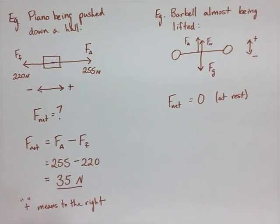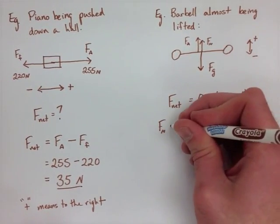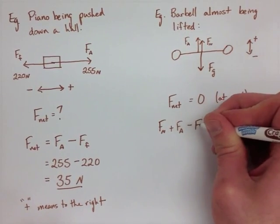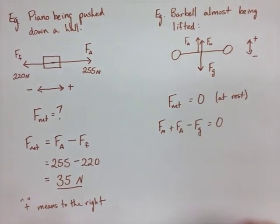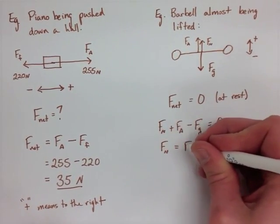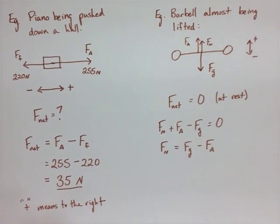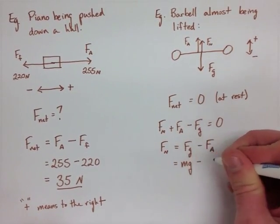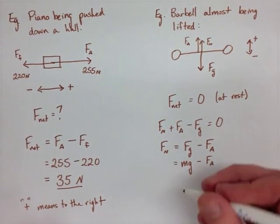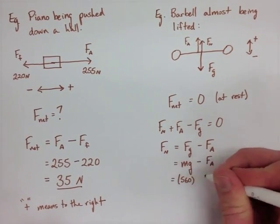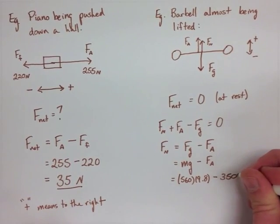Our net force has to be zero because we're at rest. If positive is up and negative is down, our normal force plus our applied force minus the force of gravity will equal zero. We can find out our normal force here by doing the force of gravity, which is mg, minus our applied force, which was 3500.